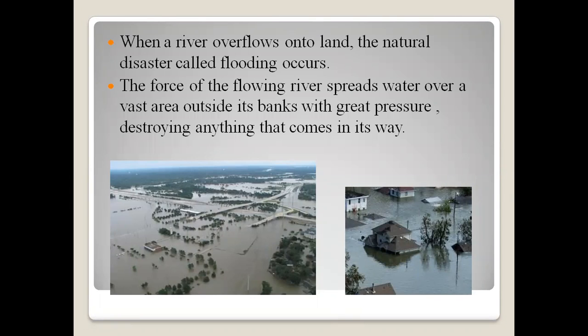When a river overflows onto the land, the natural disaster called flooding occurs. As you can see here, how the water covers the land. This can happen by the overflowing of the river onto the land, and the force of the flowing river spreads water over a vast area. Water has so much power. When the river overflows, the water comes with greater power and spreads over a larger area outside its banks with great pressure, destroying anything that comes in its way.